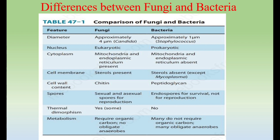Continuing the fungi vs. bacteria comparison: in the cell membrane, fungi have sterols (ergosterol) but bacteria have no sterol — except Mycoplasma. Cell wall: bacteria contain peptidoglycan, fungi contain chitin. Regarding spores: fungi reproduce sexually and asexually through spores, but bacteria reproduce by binary fission; bacterial endospores are not for reproduction but for survival in unfavorable conditions. Thermal dimorphism is present in fungi but absent in bacteria. In metabolism, fungi require organic carbon and are not obligate anaerobes, whereas bacteria may not require organic carbon and many bacteria are obligate anaerobes.